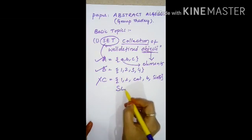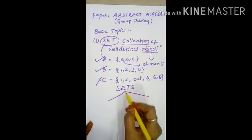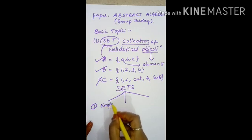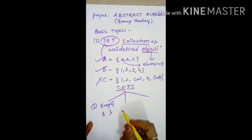Sets are classified into three kinds. Number 1, empty set. Empty set means the set which does not consist of any element is called empty set.